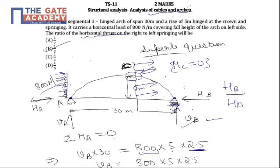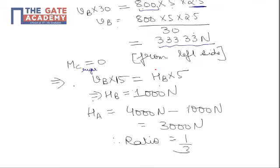Only VB is acting and HB is acting. VB is known, HB is unknown. So we can calculate VB into 15 equal to HB into 5 from which HB comes out as 1000 N.